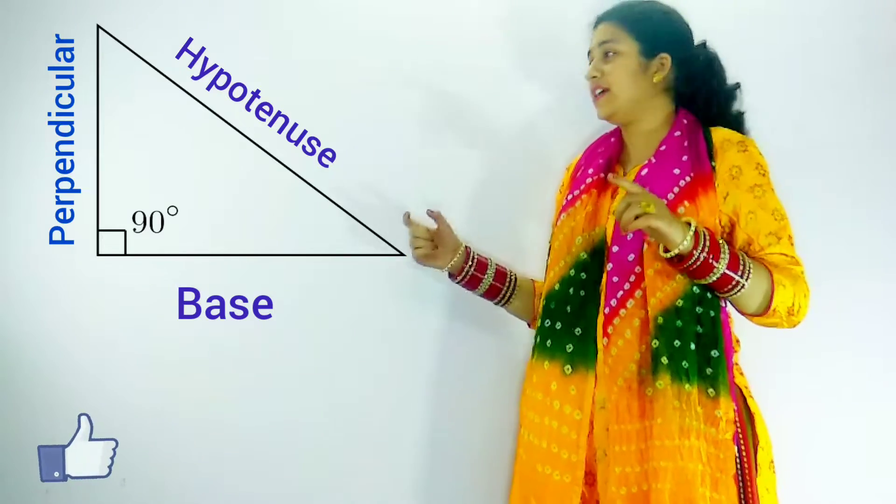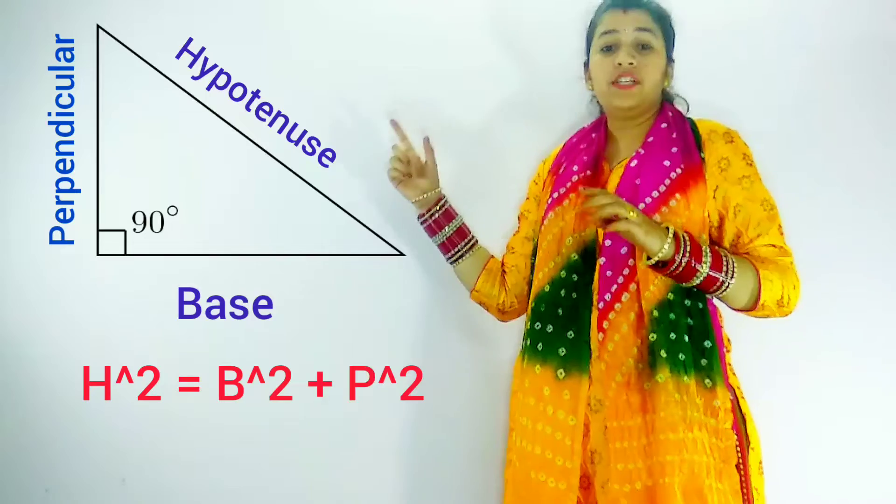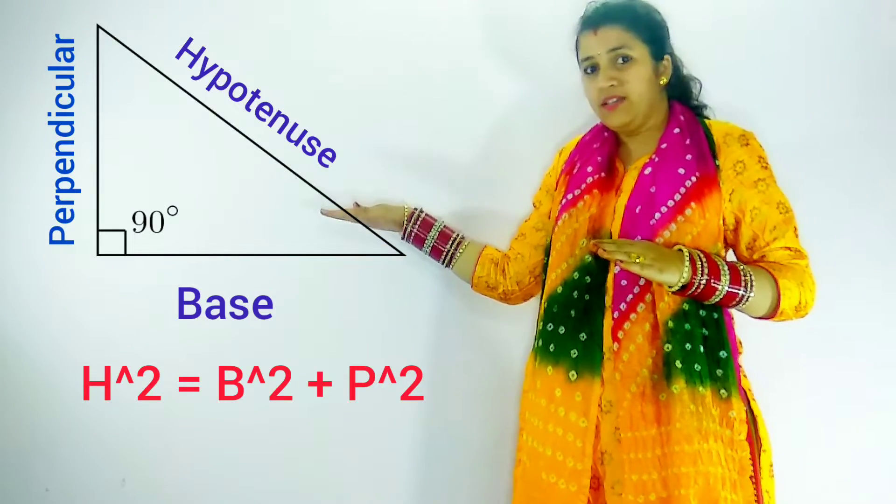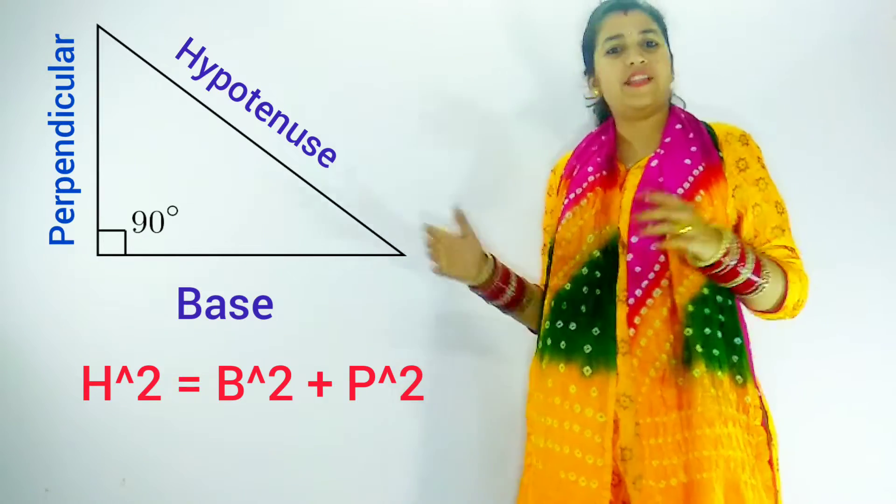Pythagoras theorem states that the square of the hypotenuse is always equal to the sum of the base squared and the perpendicular squared.